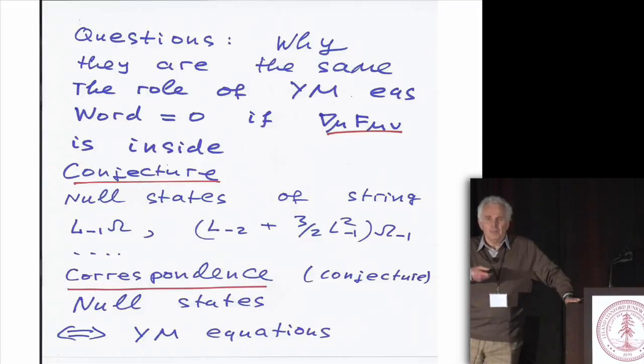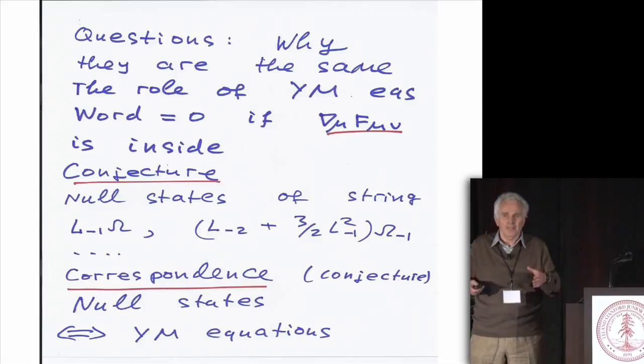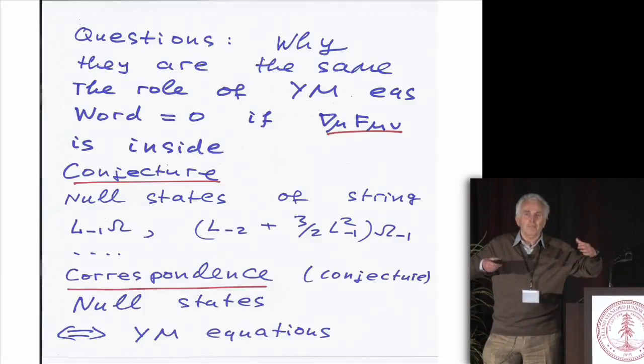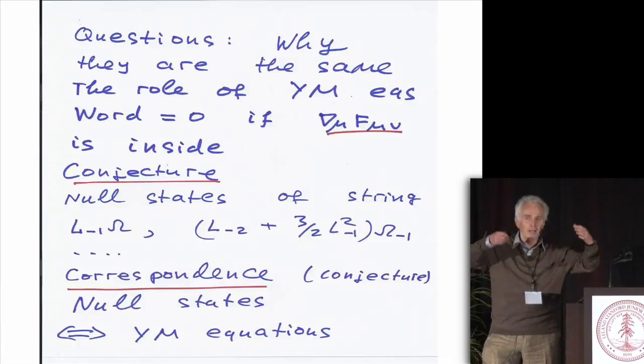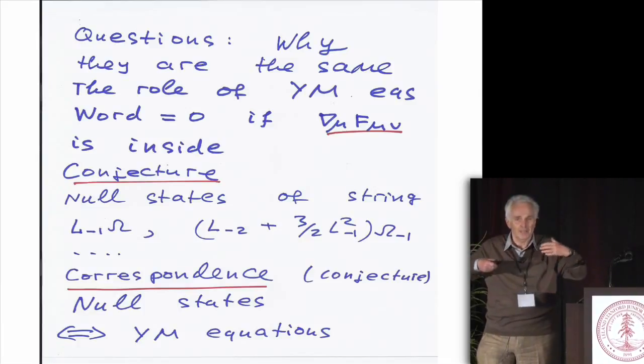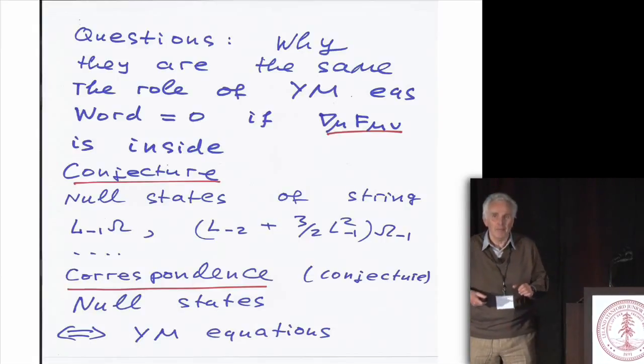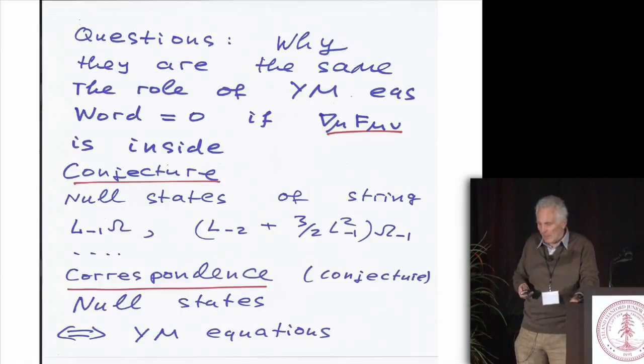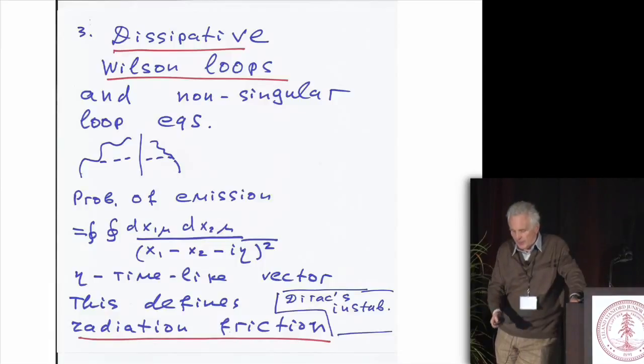I think very often in the literature, you see the statements that gauge-string duality is simply in the ADS case, you have conformal symmetry in the bulk, and it induces conformal symmetry at the boundary. Therefore, this is the same. I think it's a very ridiculous logic.